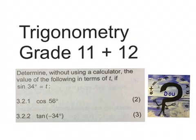Good day. This video is trigonometry. It's part of the grade 11 and 12 syllabus. We are going to do a sum like this one that says determine without using a calculator the value of the following in terms of T. If sine 34 degrees is T, we'll work out cos 56 and tan minus 34 degrees. We're going to do something like this.